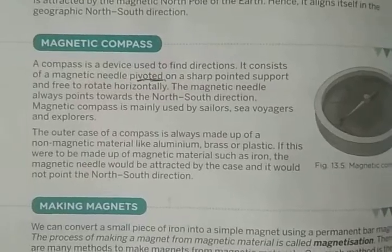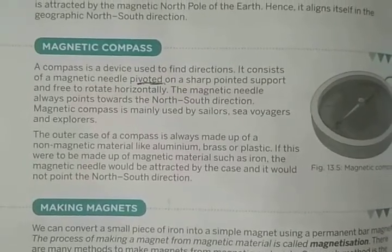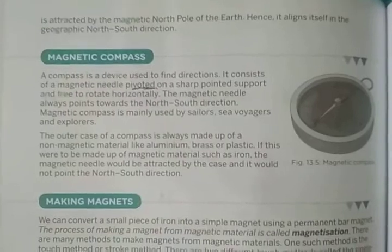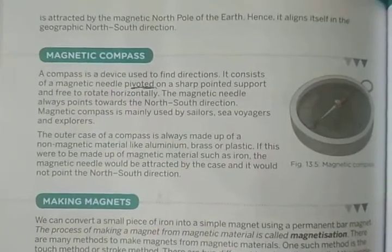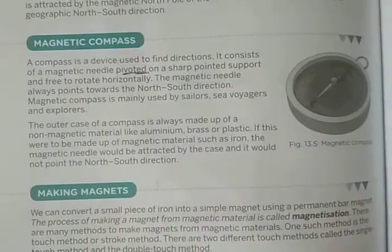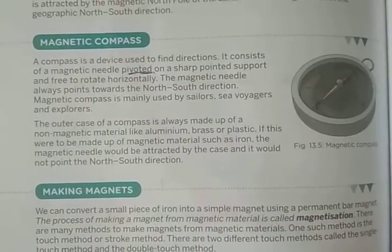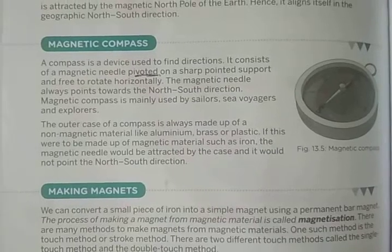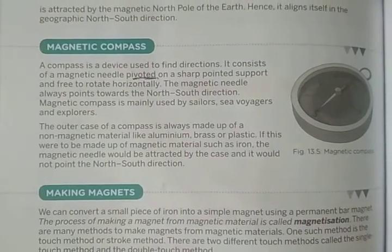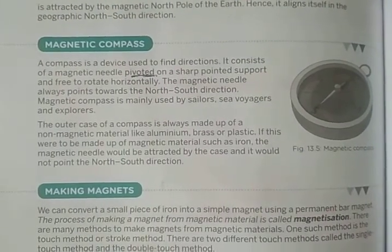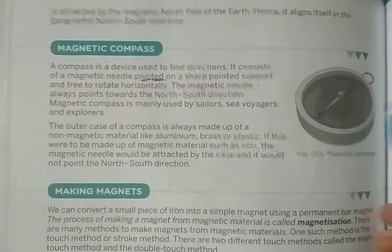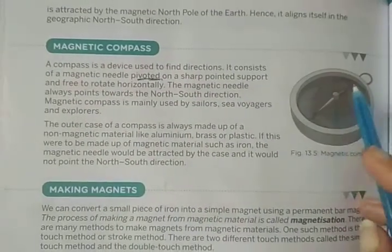As we have discussed the properties of a magnet, it will either attract or repel materials, and it will freely suspend in the north-south direction. The magnet at rest will always be in the north-south direction.